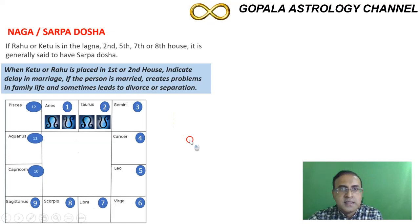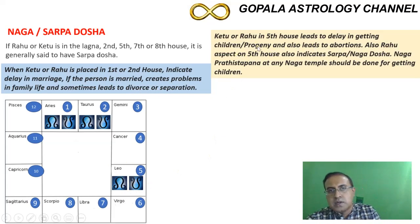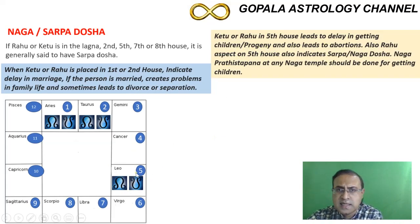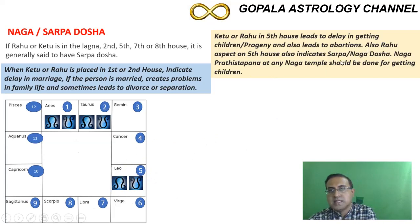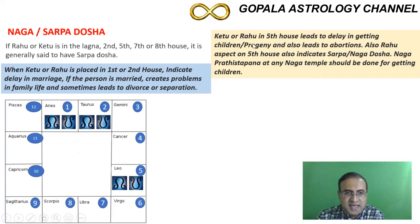When Rahu or Ketu is present in the fifth house — which is all about creativity and children — it creates a lot of delay in the birth of a child and can even lead to abortions. Even if Rahu merely aspects the fifth house, it can cause Naga Dosha or Sarpa Dosha. The remedy in this case is what is known as Naga Pratishtapana, which I will explain towards the end of the video.